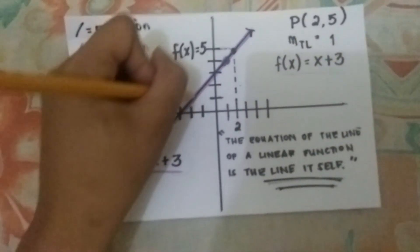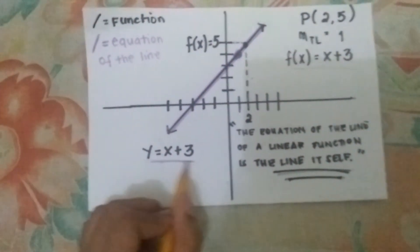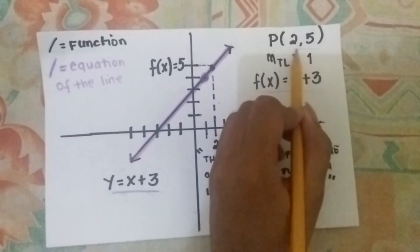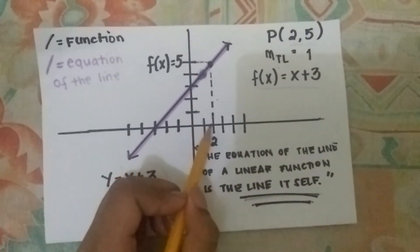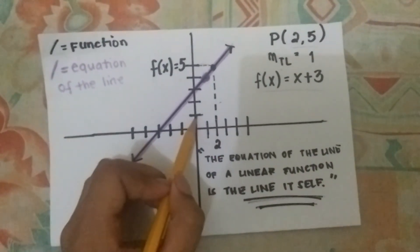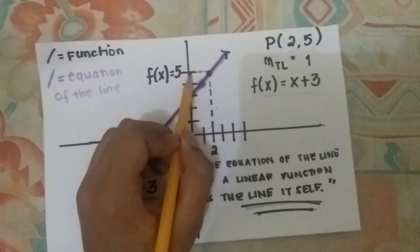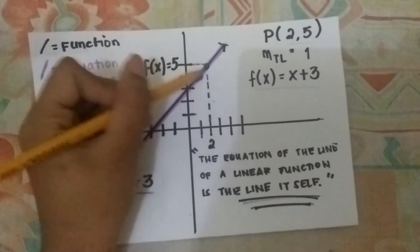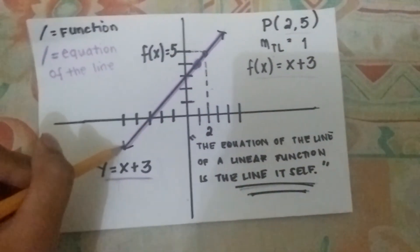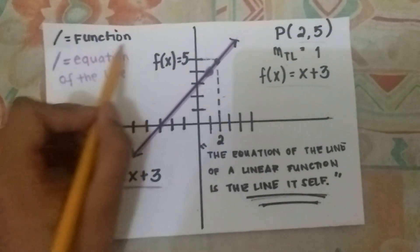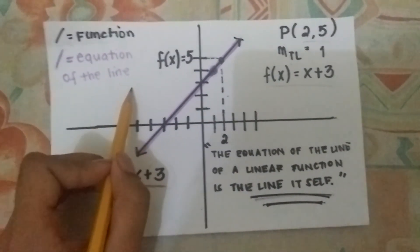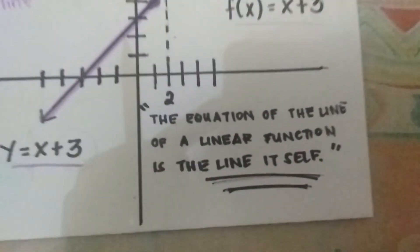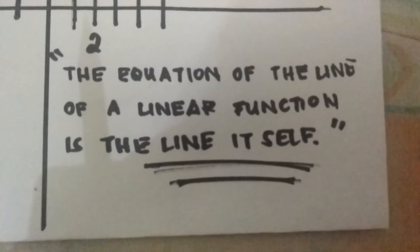Draw a diagonal line, which represents the equation of the line. And for the point of tangency, the given point is (2, 5). Draw hidden lines meeting up at that point, and draw another diagonal line. As we can see, black represents the function and violet represents the equation of the line. For the generalization: the equation of the line of a linear function is the line itself.